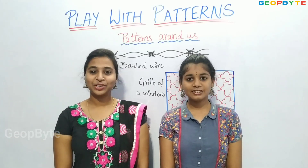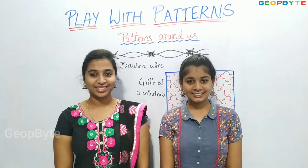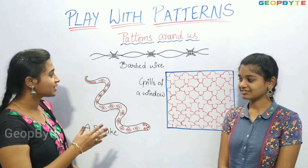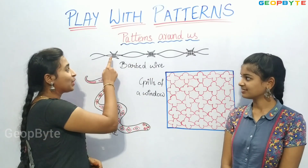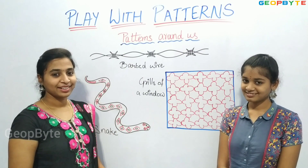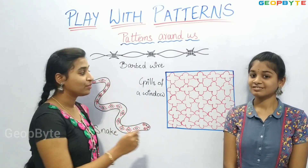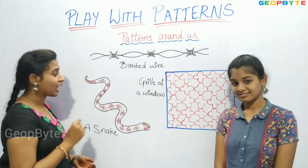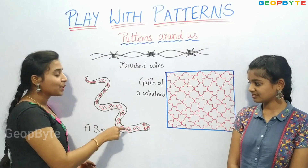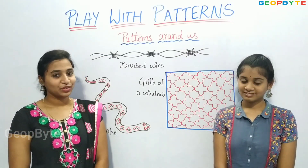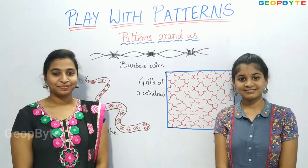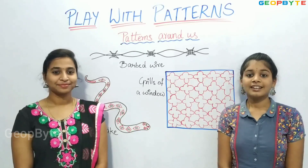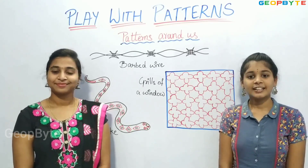Now let us get into the topic: patterns around us. Hey kids, see here. We have different types of patterns here. In this barbed wire, we have this kind of pattern repeating again and again. If we see this window, we have this flower type pattern continuously. And if we see this snake, we have some diamond shaped thing around the whole snake. Similarly, try to observe the patterns on the objects around you. We will have different patterns on different clothes, so try to find different patterns on different clothes.